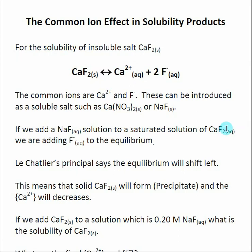Previously we have looked at how common ions affect equilibrium, and now we're going to apply that same idea to a solubility product. If I take an equilibrium for an insoluble salt like calcium fluoride, we realize that there are actually two common ions: the Ca²⁺ and the F⁻. We can add these common ions to a solution by adding their soluble salts.